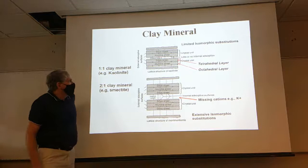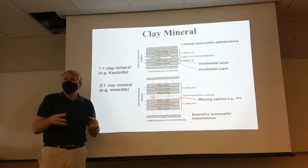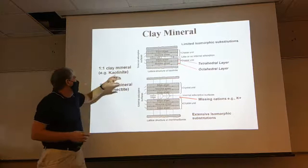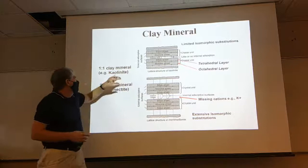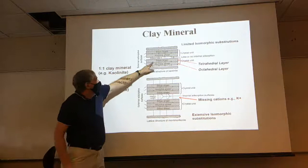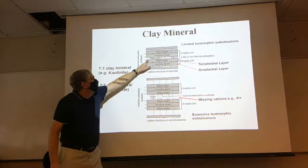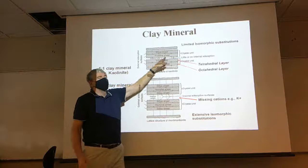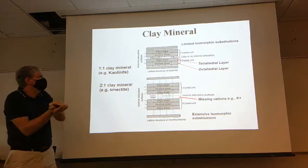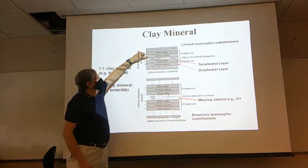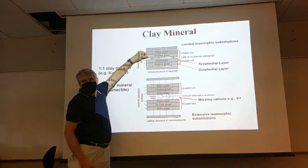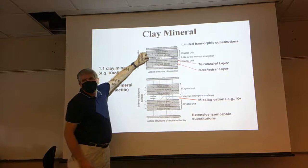Here are the two main types of clays: kaolinite is a one-to-one clay mineral — one tetrahedral layer and one octahedral layer. That cycle repeats itself with a really tight, narrow fit, so we're not sticking a lot of cations in there. Looking at the actual molecular spacing: tetrahedral layer, octahedral layer, and then hydrogen bonds in between which are very narrow.